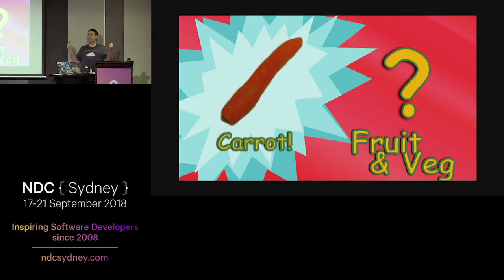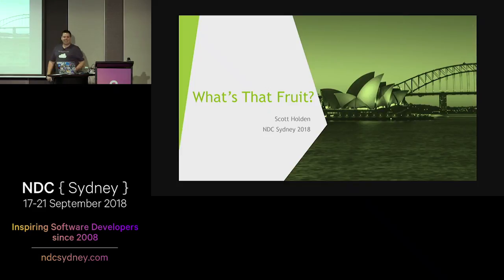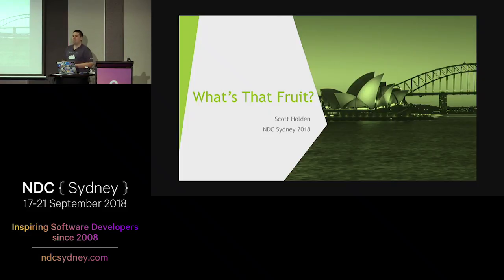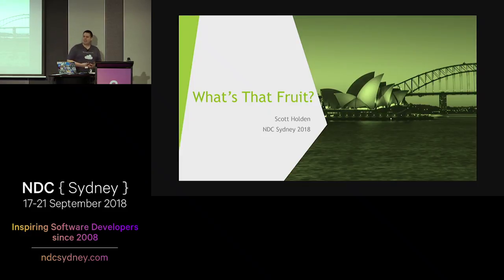Everyone that answered correctly, come up afterwards - I've actually got the actual fruits here as prizes for you. So, What's That Fruit? It's a little bit of an interesting concept. We were pretty easily able to identify those fruit just from the shadows, but what does it mean for a computer to recognize those individual pieces?